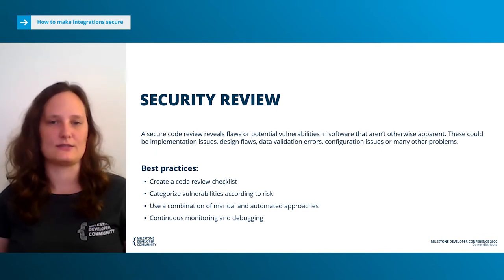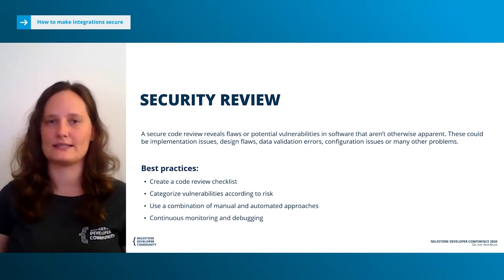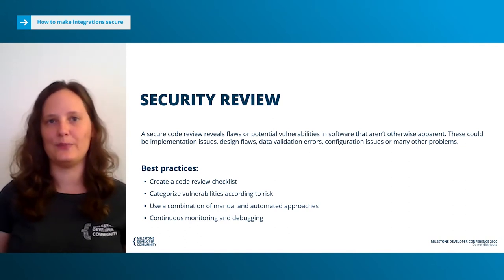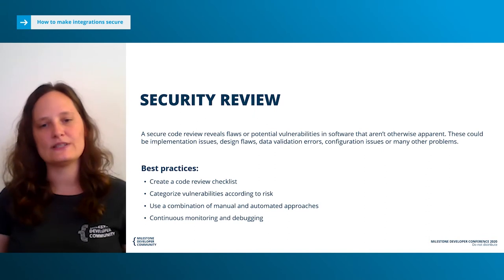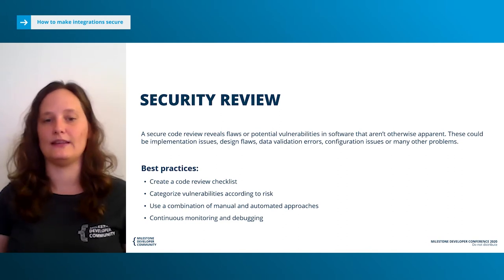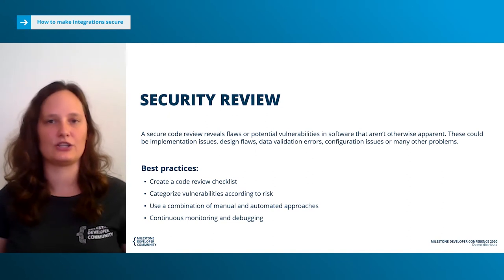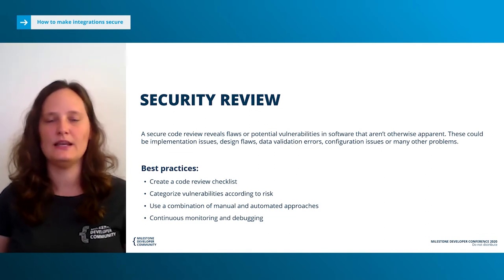There are a couple of best practices to follow. You should create a code review checklist to follow a simple comprehensive methodology. Categorize vulnerabilities according to risk to address the most important ones first. Use a combination of manual and automatic approaches — they both have advantages and disadvantages. Manual review helps you identify logical flaws or errors, especially in the design and architecture of an application, but it is time-consuming and requires a highly knowledgeable expert in both security and development.